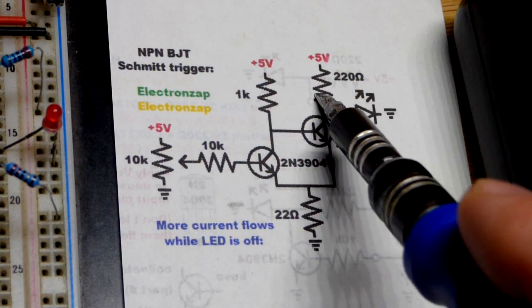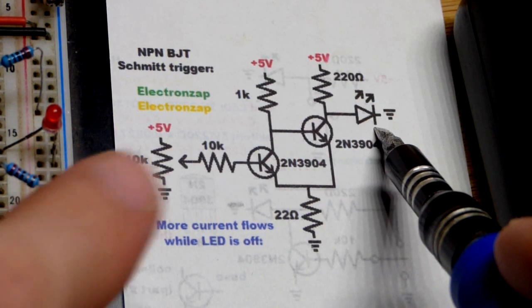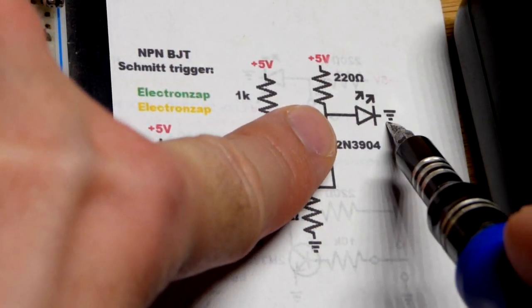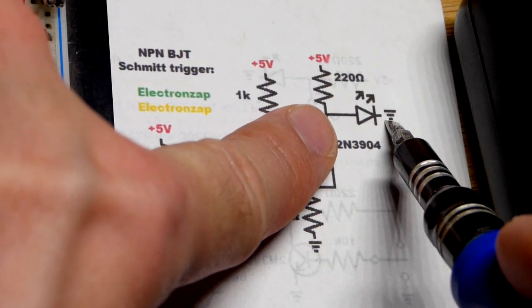So now, we're going to start with the resistor and the LED. If I get rid of this transistor, you can see the LED wants to be on right there.